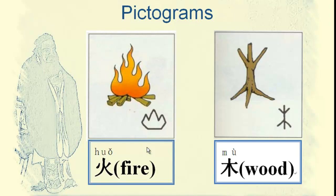Let's see the next page. Before that, let's practice the pronunciation: 火, 火. 木, 木 — that's wood or tree.